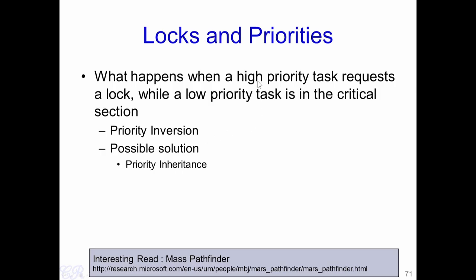Essentially, we have a task which is important and given high priority, yet it is waiting for a lower priority task to complete its execution. If you look at the link referenced here, you will see an interesting real-world case where priority inversion occurred with the Mars Pathfinder. One possible solution is known as priority inheritance. In this solution, whenever a low priority task is executing in the critical section and a high priority task requests that critical section, the low priority task is escalated to a high priority — its priority becomes equal to that of the high priority task. The low priority task then executes with this high priority until it releases the critical section, ensuring that the high priority task would execute relatively quickly.